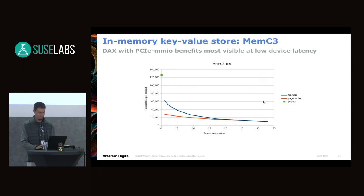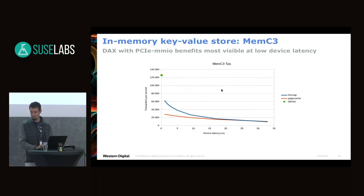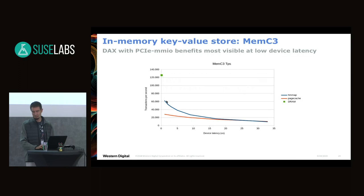For an in-memory key-value store application, comparing the page cache approach — always bringing pages into host memory on fault — versus HMMap with DAX mapping, we see substantial benefit when the emulated backend latency is low. At the lowest emulated latency of 1 microsecond, we get roughly a factor of 2 performance gain compared to normal page cache. This is worse than having everything in DRAM, but still a pretty substantial gain.